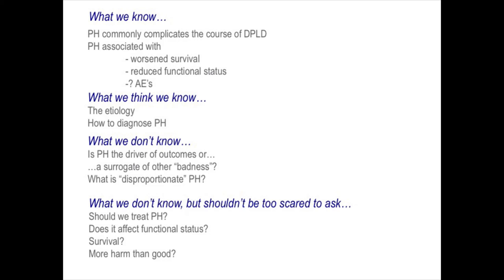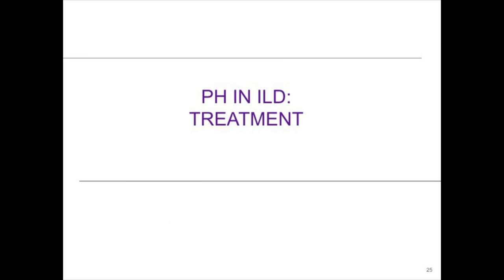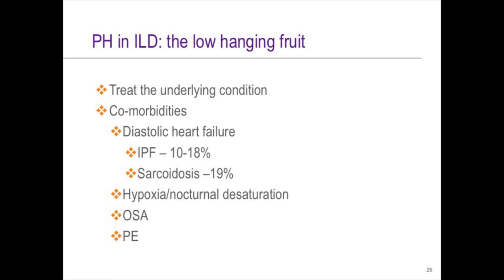We don't know, but shouldn't be too scared to ask: should we treat PH? If we do, does it affect patients' functional status? What's the impact on survival, and are we doing more harm than good? You can also possibly have discordant outcomes — improved functional ability and reduced survival, or improved survival and reduced functional ability. We've seen that in the heart failure literature with the use of inotropes, so that's just another word of caution as we work through these studies.